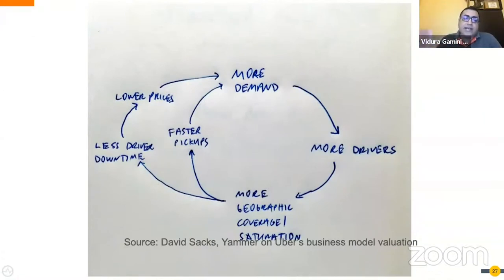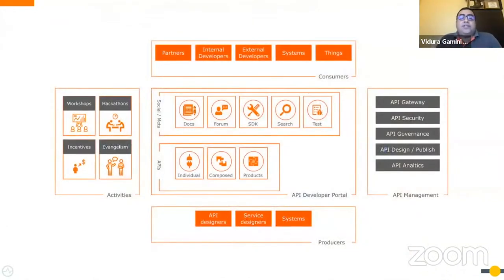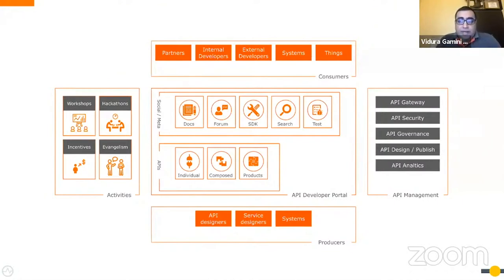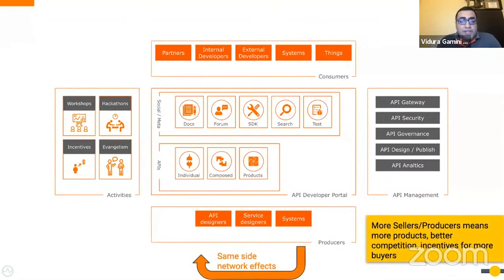These value networks can be further facilitated through API marketplaces and platforms. This is David Sachs's famous napkin diagram explaining Uber's business model. This particular diagram is very popular because it's a prime example of how networks thrive and create opportunities and positive value for all stakeholders. When there's more demand for rides, more drivers join — resulting in better geographic coverage. Better coverage results in faster pickups, which leads to more people wanting to use the Uber service.